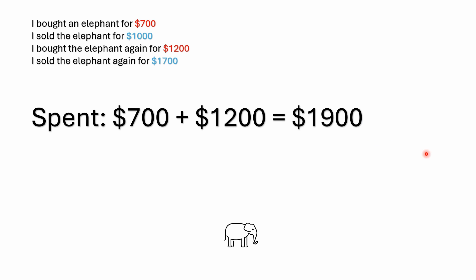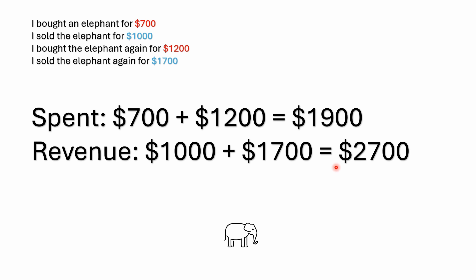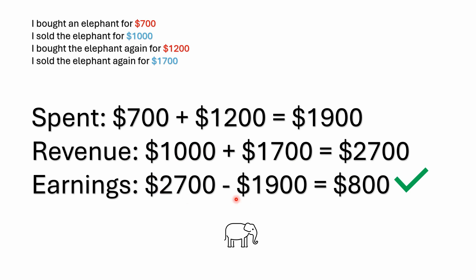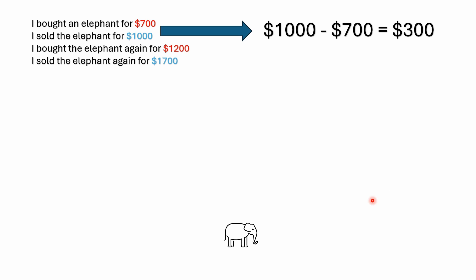One approach is to add up all the money spent. He spent $700 the first time and $1,200 the second time, for a total of $1,900. We have no idea how much money he had to start with — the problem doesn't tell us that. As for revenue: $1,000 plus $1,700 equals $2,700. So earnings equals revenue minus expenses: $2,700 minus $1,900 equals $800.